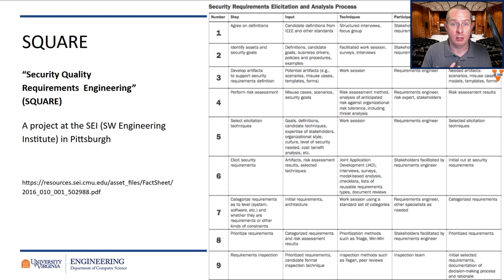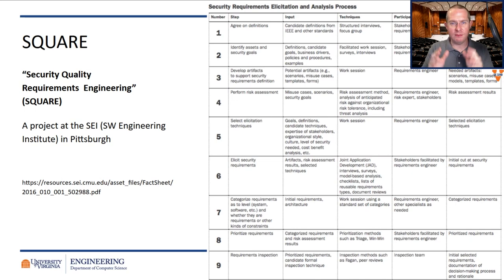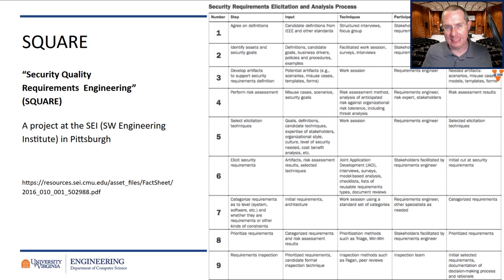Backing up to step one: the developers or requirements elicitation team and the stakeholders need to agree on definitions — this is what's important, this is how we're going to protect it, this is what we're going to call it. So you identify those assets, perform the risk assessments just like we just did. What is the problem if someone gets access to user data? How big an issue is it for the company from a PR perspective? That's something you have to consider as well. How to grow those requirements, prioritize them, go through the normal requirements process. Something like SQUARE gives you a framework for identifying the critical security needs so you're focusing on them from the very beginning.